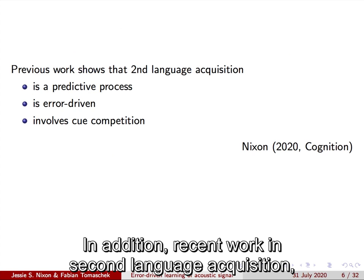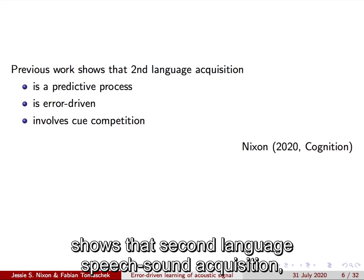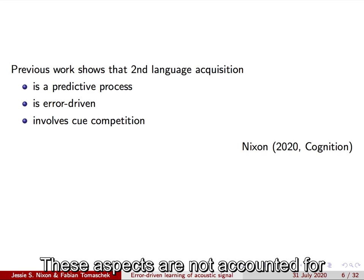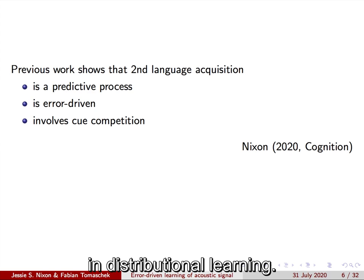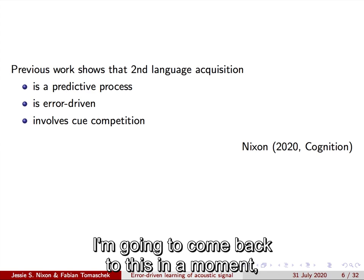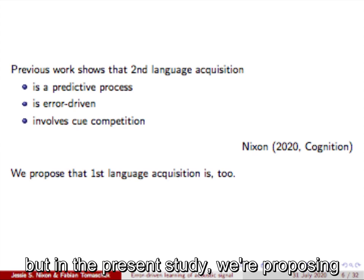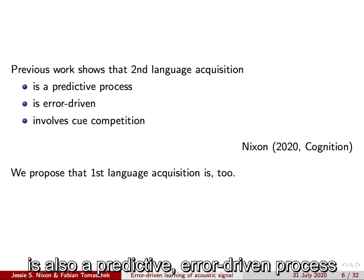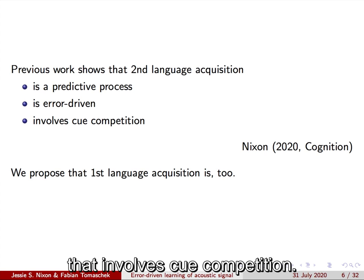In addition, recent work in second language acquisition shows that second language speech sound acquisition is a predictive process, error driven and involves cue competition. These aspects are not accounted for in distributional learning. I'm going to come back to this in a moment. But in the present study, we're proposing that first language speech sound acquisition is also a predictive error driven process that involves cue competition.